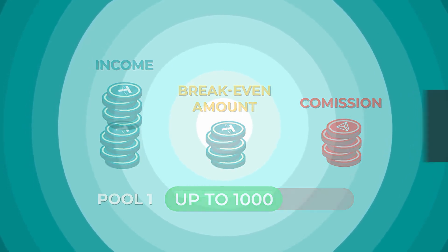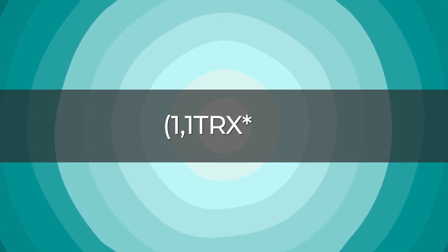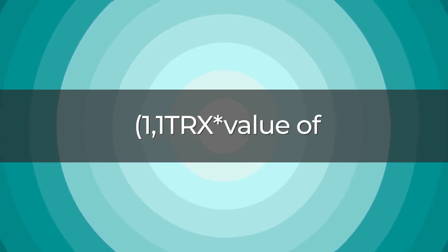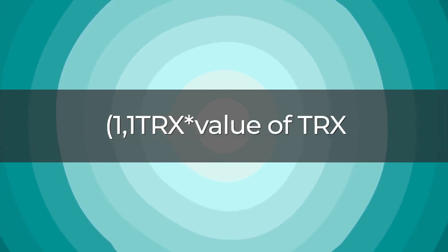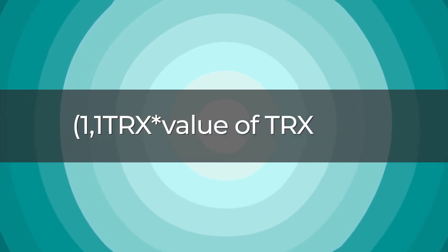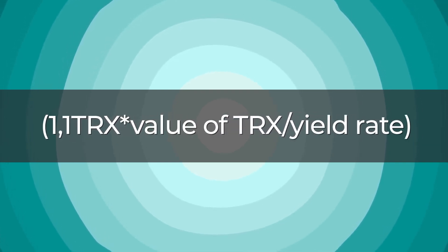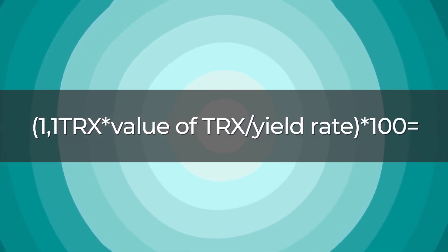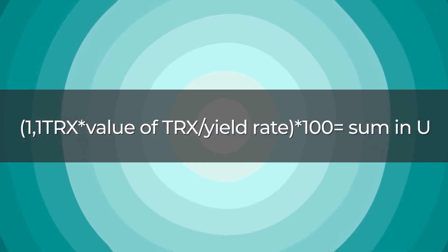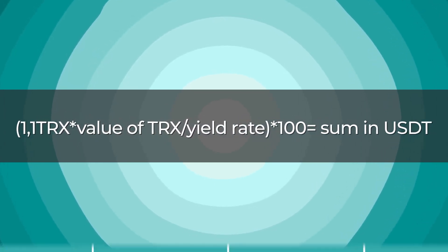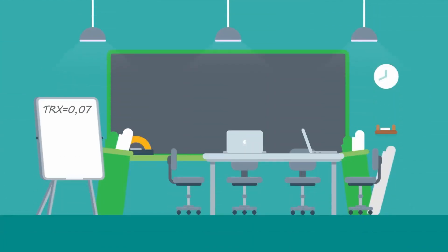To calculate the break-even amount, use the following formula: multiply the approximate value of 1.1 TRON for one deduction by the value of the cryptocurrency TRX, then divide by the fixed or flexible staking yield rate. The result is multiplied by 100 to obtain the amount in USDT. For example, the value of TRX is 0.07 USDT.